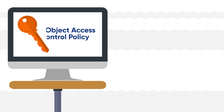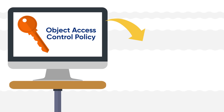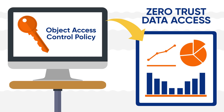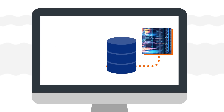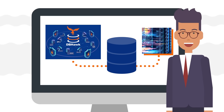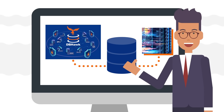dbHawk's built-in, fine-grained object access control policy supports zero-trust data access. Dynamic data masking and central auditing log capabilities enable administrators to have a 360 view of each user's activities.